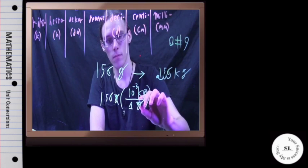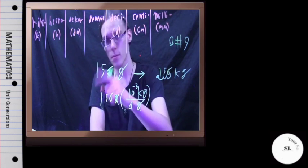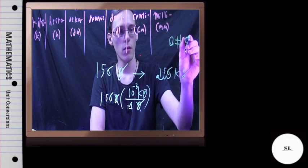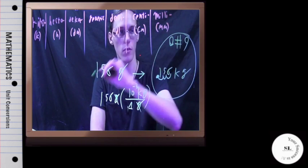Grams cancel, this moves the decimal three times to the right whether you do it by hand or in the calculator and both times you get 156 kilograms for question number nine.